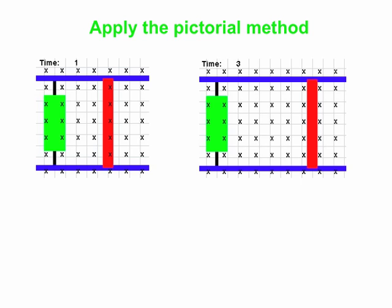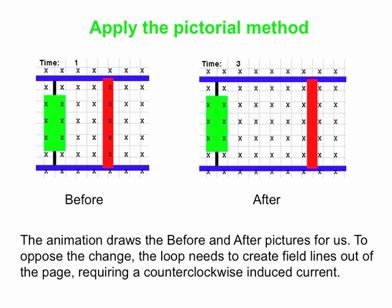And as we let the rod move to the right, then we've got a loop which has changed. And in particular, the magnetic flux through the loop has changed, right? We've got more flux after the rod has moved to the right than we started with. So there's been an increase in magnetic field lines passing through the loop into the page.